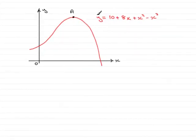In this question we're given the graph of y equals 10 plus 8x plus x squared minus x cubed, and it has a stationary point here at A. The question asks us to show that the x coordinate is 2 at this point A.